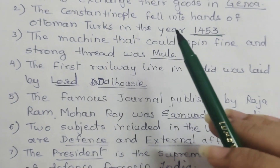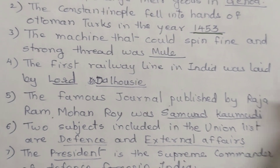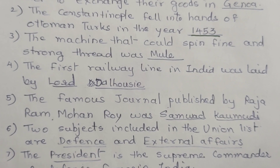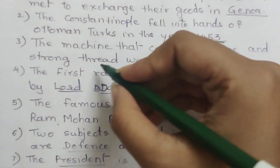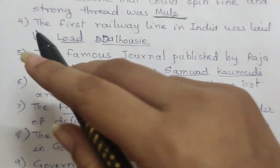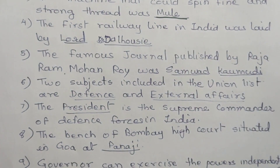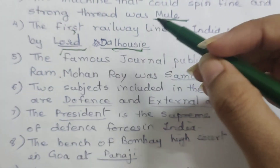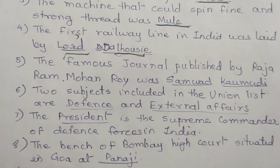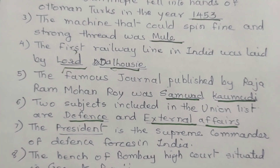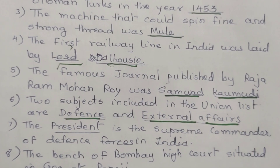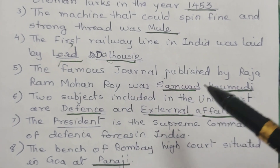3. The machine that could spin fine and strong thread was — Mule. 4. The first railway line in India was laid by — Lord Dalhousie laid the first railway line in India. 5. The famous journal published by Raja Rammohan Roy was — Sambad Kaumudi.